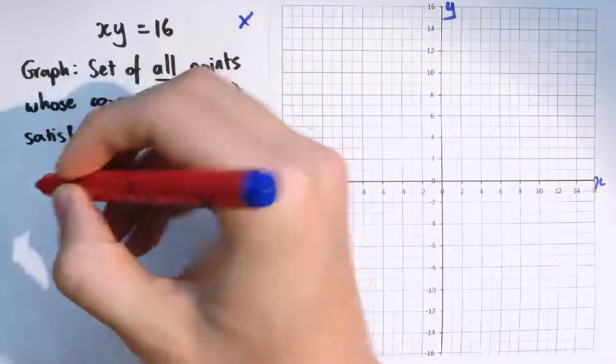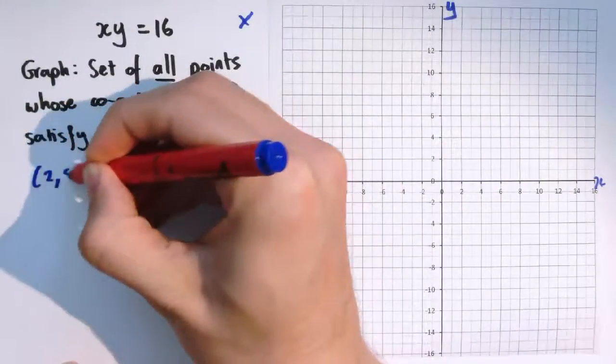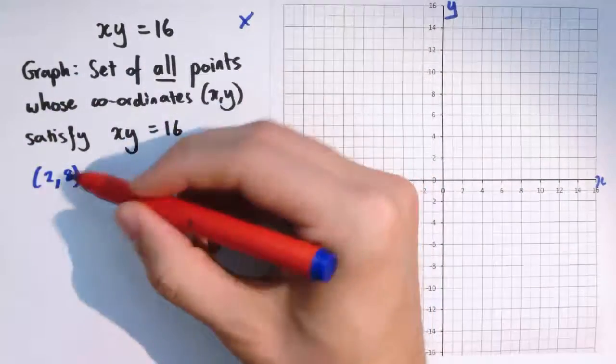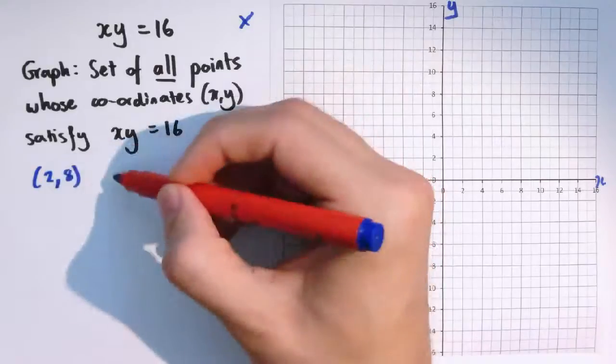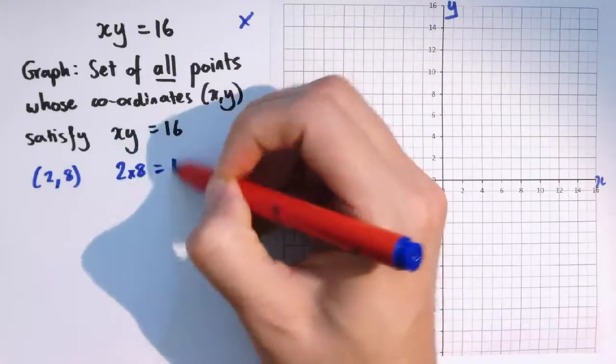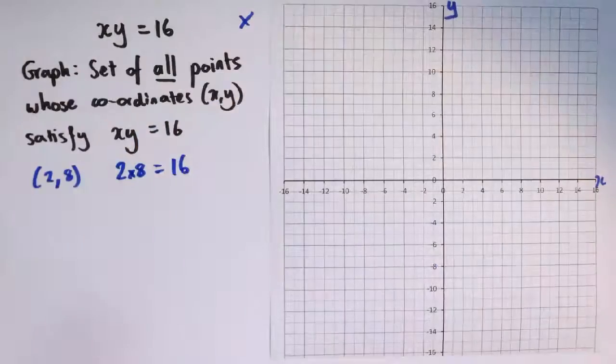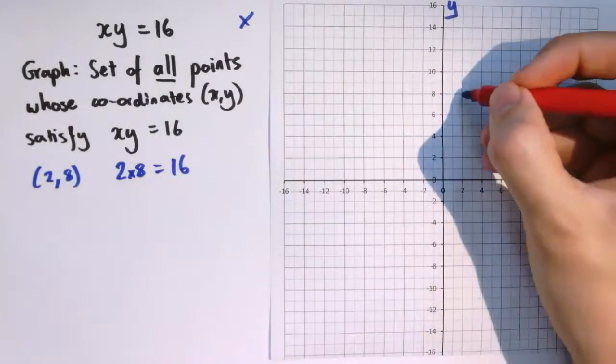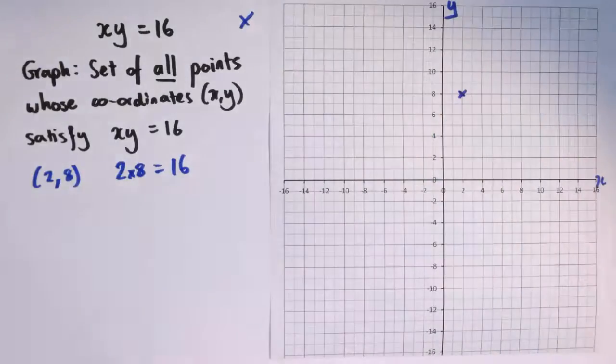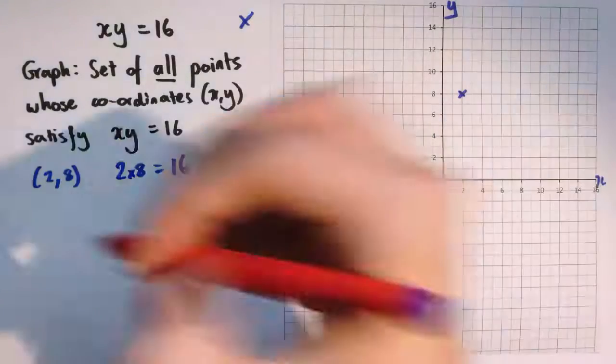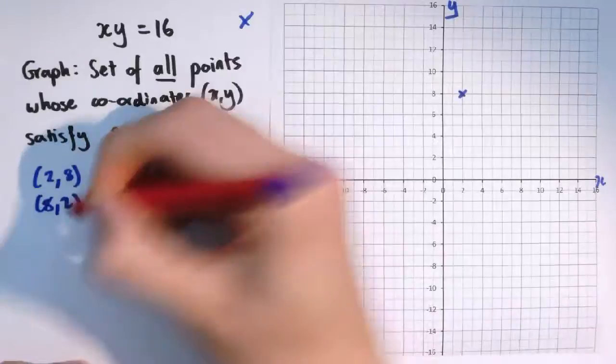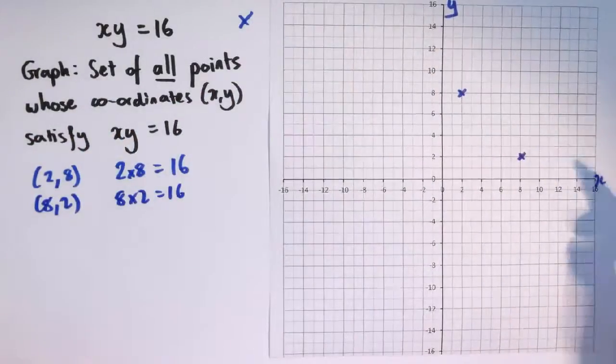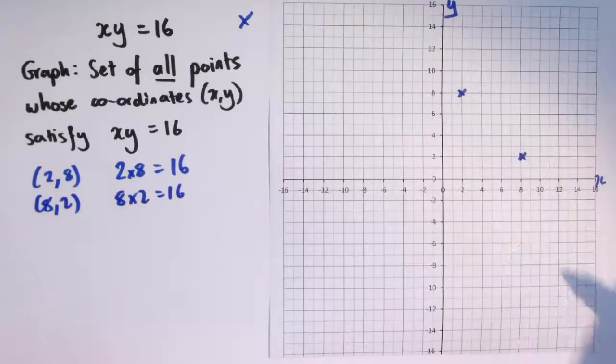So one point on this graph, for example, is the point (2,8) with x equals 2 and y equals 8, because when we substitute in 2 for x and 8 for y, we get 2 times 8 which equals 16. So let me put in that point there, (2,8). Similarly, (8,2) would work. 8 times 2 is 16. That's the point with x coordinate 8 and y coordinate 2.